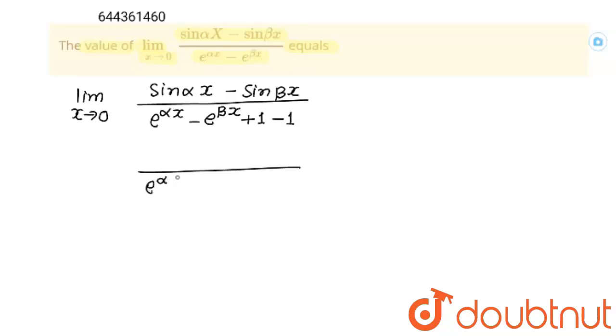First of all we will write e to the power alpha x minus 1 in one bracket. And from both these terms I will take minus common, so this will become e to the power beta x minus 1.